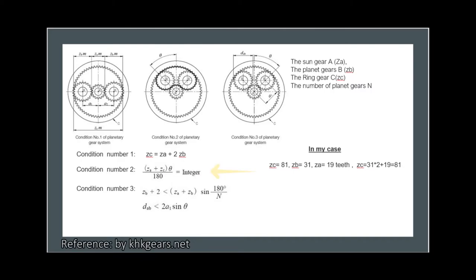Therefore, the next equation must be satisfied, where theta is half the angle between adjacent planet gears. Satisfying the third condition ensures that adjacent planet gears can operate without interfering with each other. This is a condition that must be met for standard gear design with equal placement of planet gears.